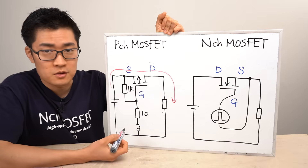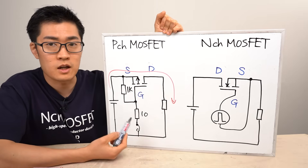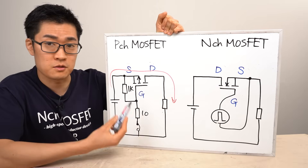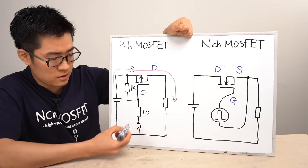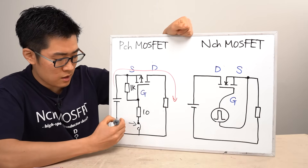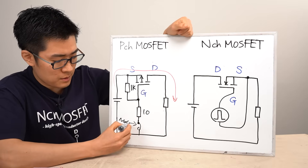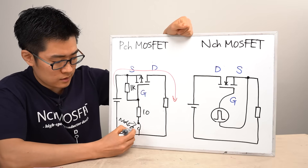With a P-channel MOSFET, current flows when the gate voltage is lower than the source voltage. So when this switch is closed, current flows through the circuit like this. One of the advantages of this setup is that the drive circuitry remains relatively simple. Although we're showing a mechanical switch for clarity, in practice an N-channel MOSFET is often used instead.